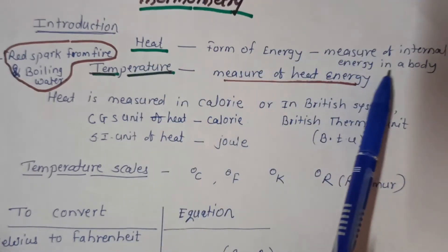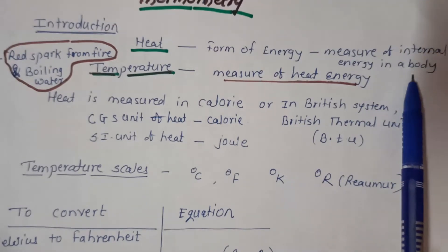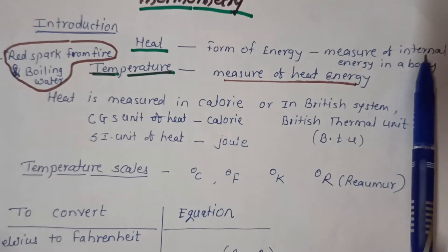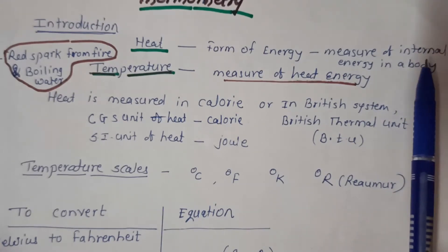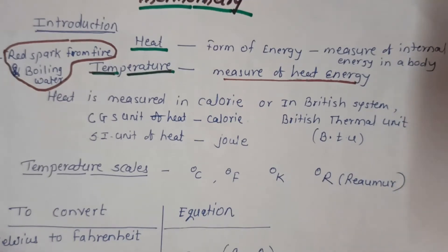Heat energy is a measure of internal energy in a body. Internal energy is made up of potential energy and kinetic energy. Further, kinetic energy is made up of either vibrational or translational, or both types of energy.